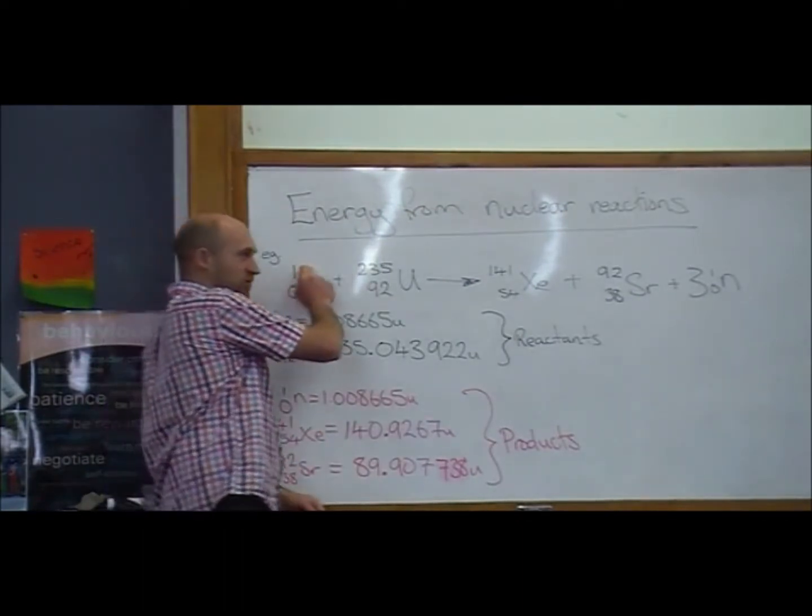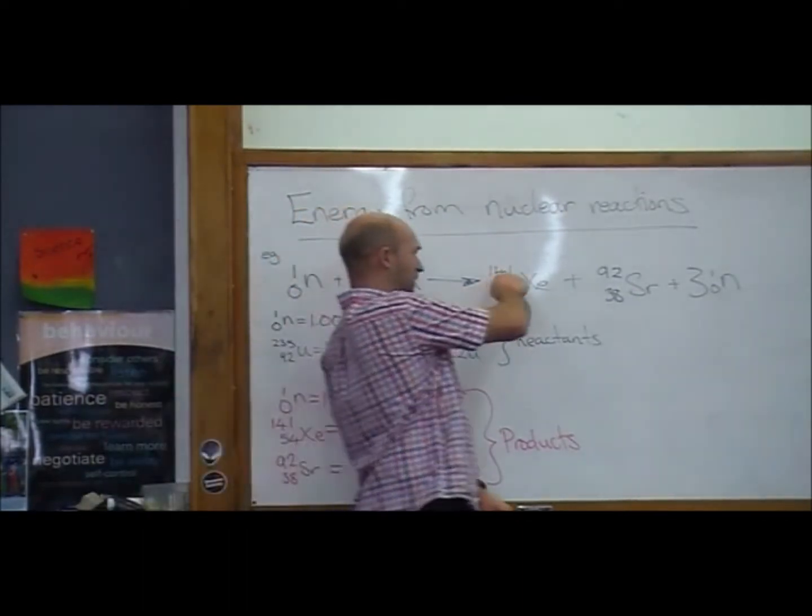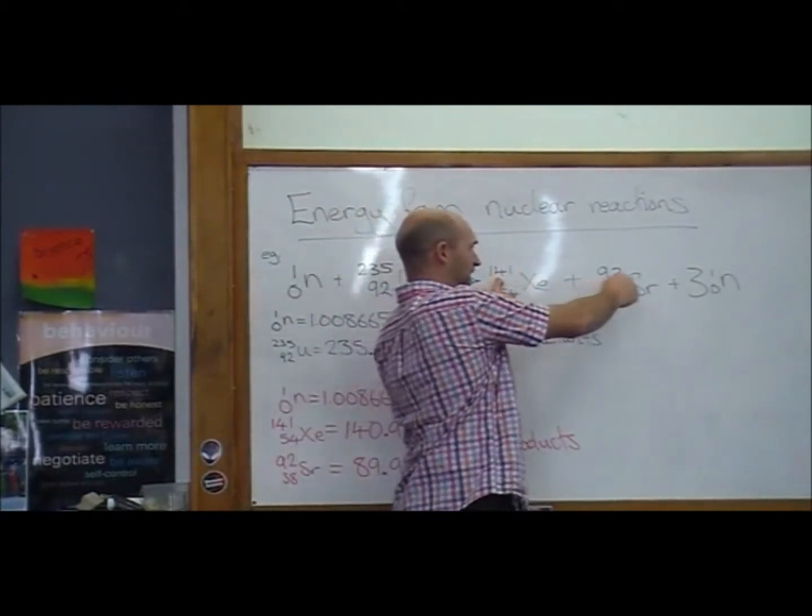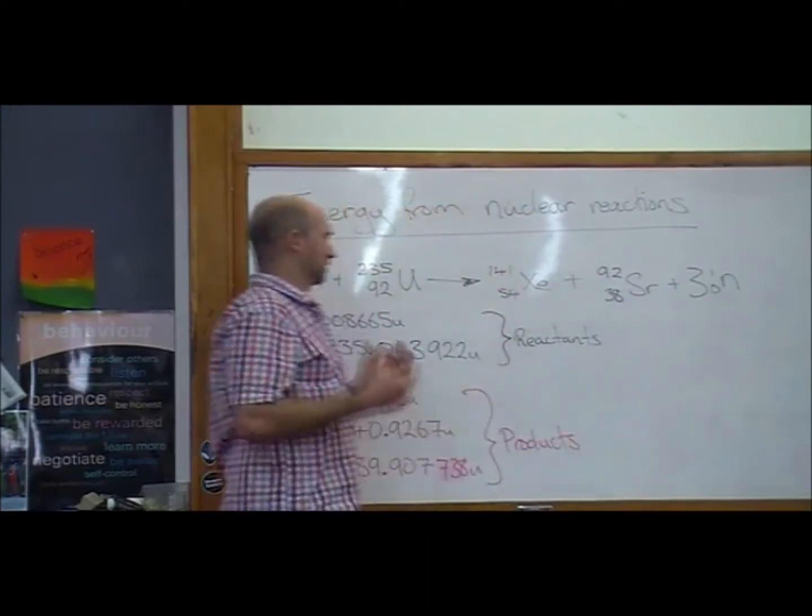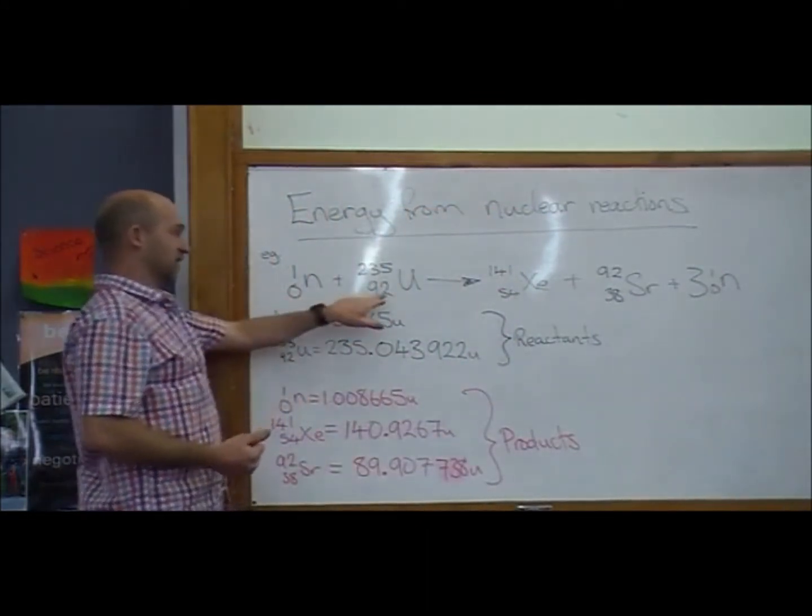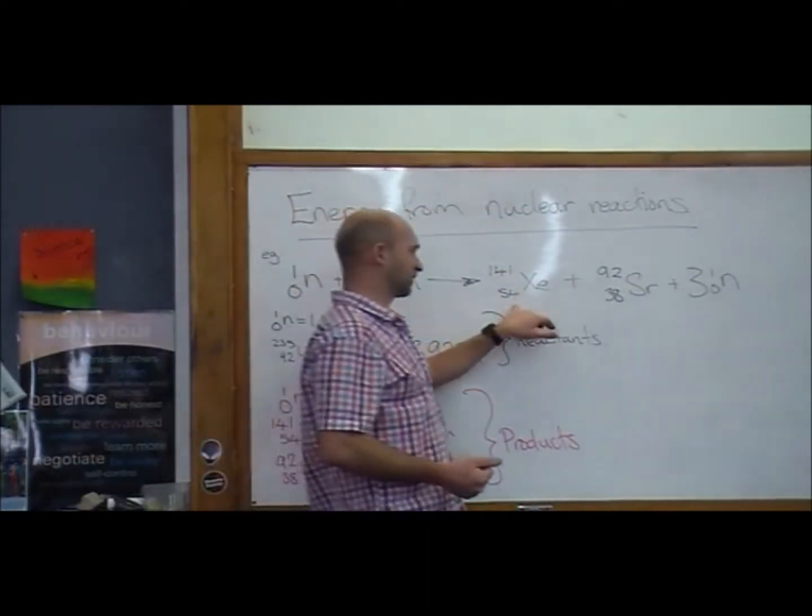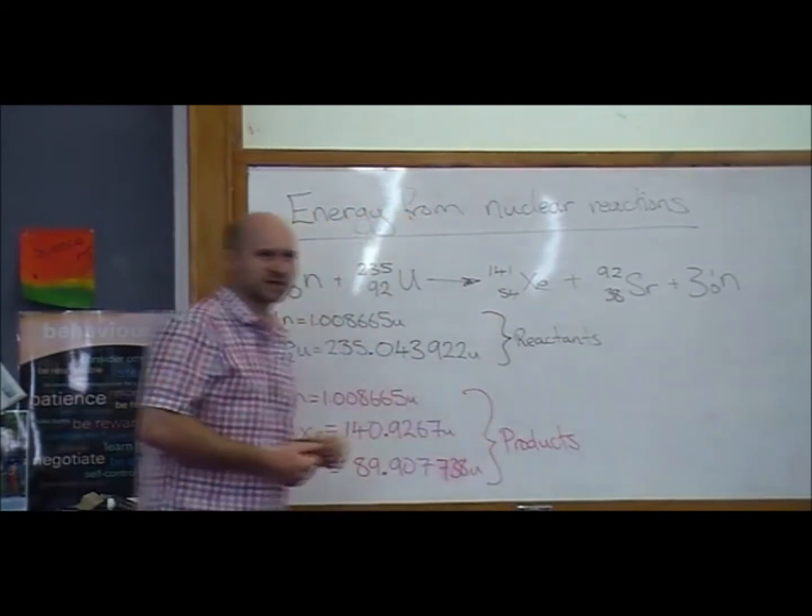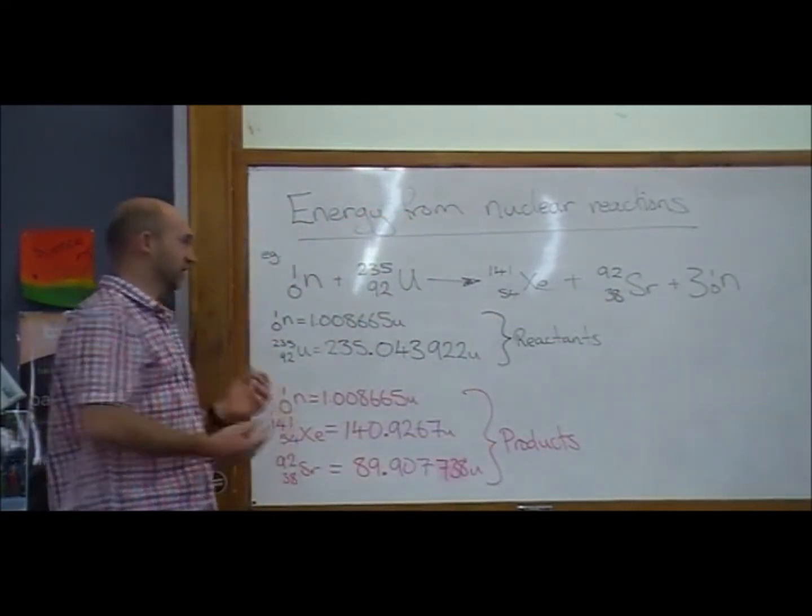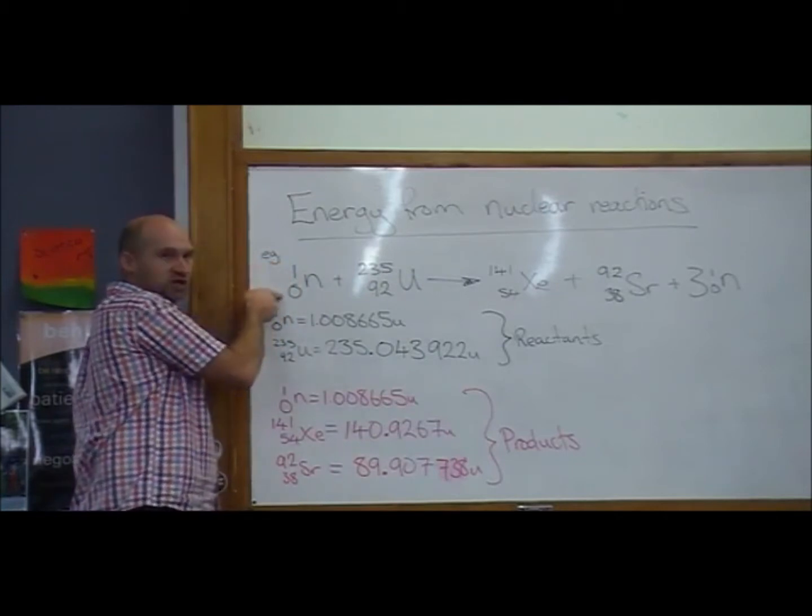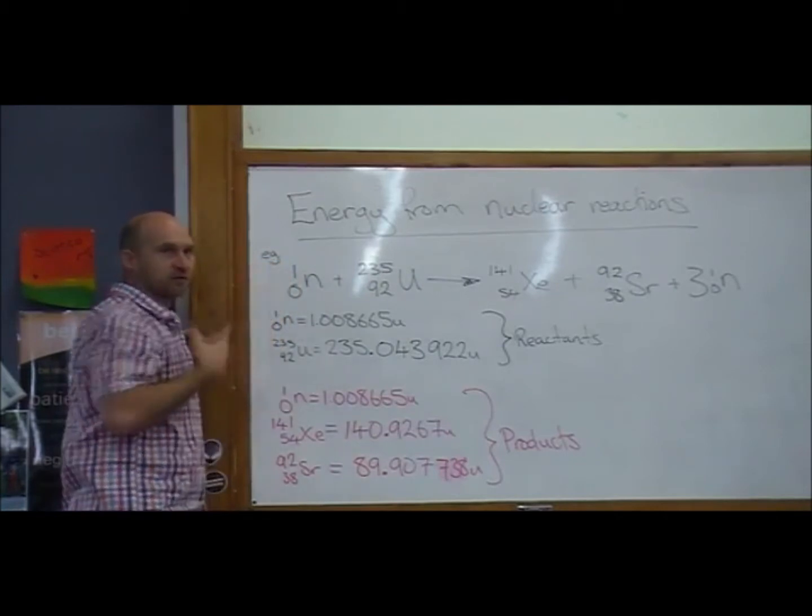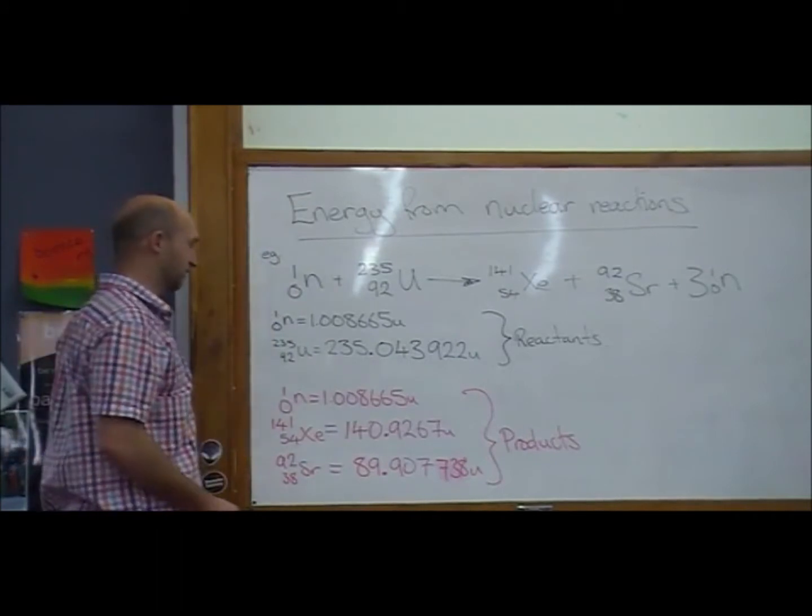So 235 plus 1 is 236. Do we get the same? 141 plus 92 plus 3 lots of 1 comes out to the same. 92, is that the same as 54 and 38? Charge number. Making sure that nucleon number is conserved and making sure that charge number is conserved. There are rules for writing down these nuclear reactions.